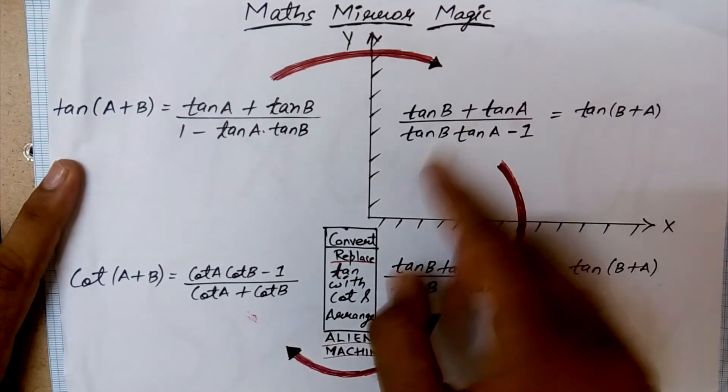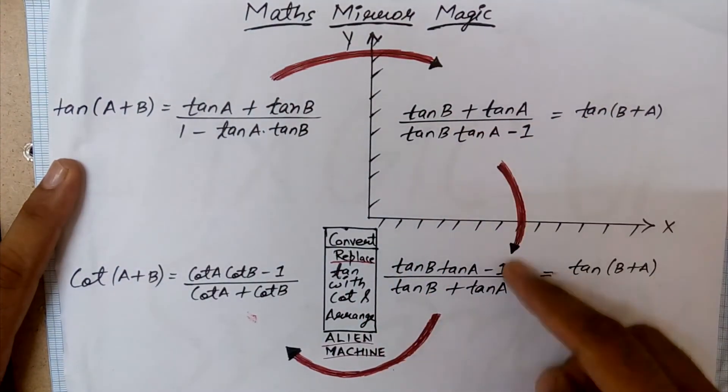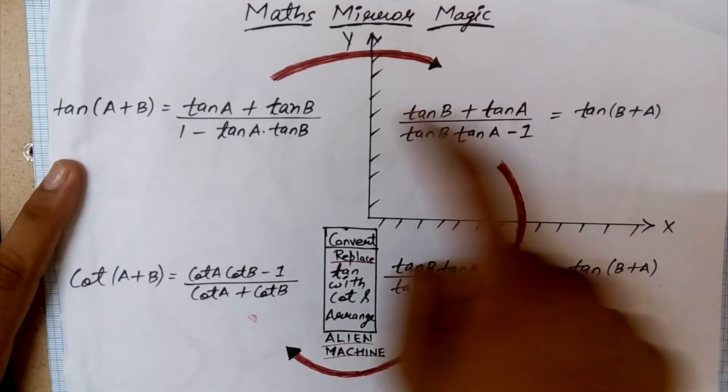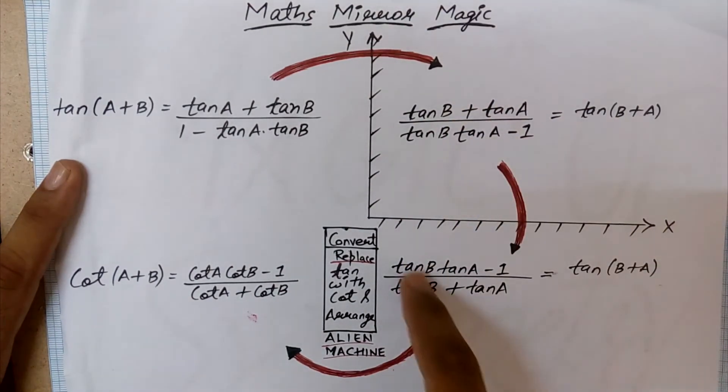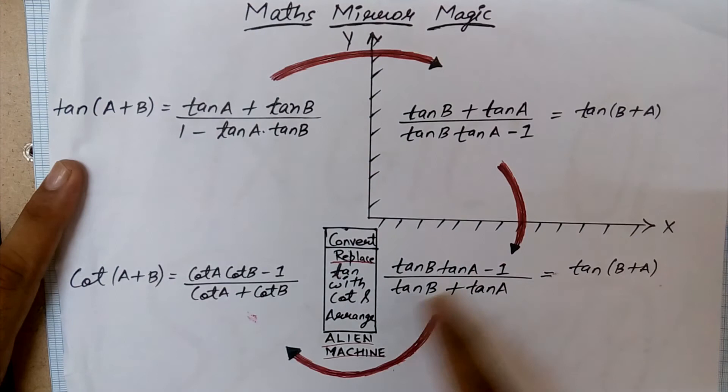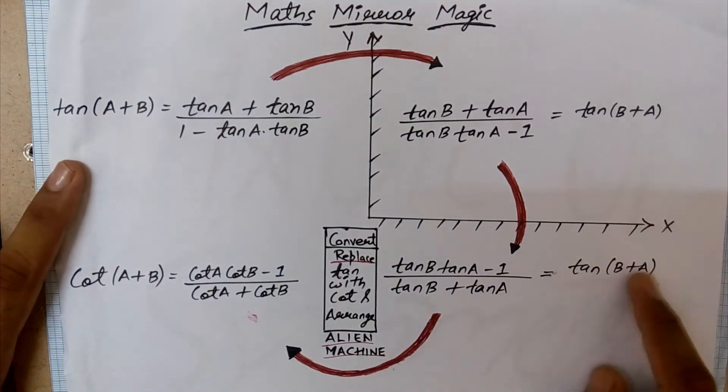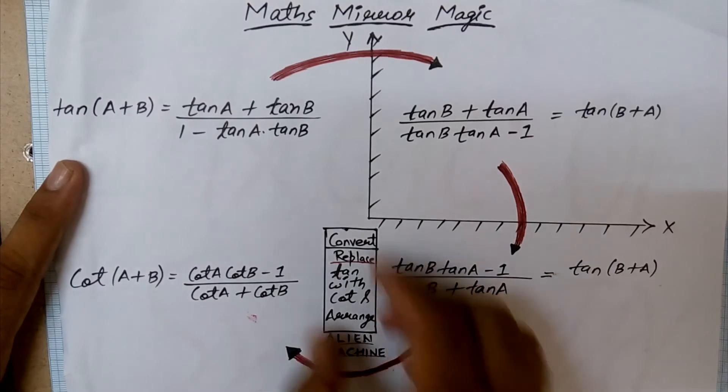So the top one will go to the farther point and this will come near, right? So (tan B tan A - 1)/(tan B + tan A) = tan(B+A). And you just like have an alien machine and you convert, or I can say replace tan with cot.